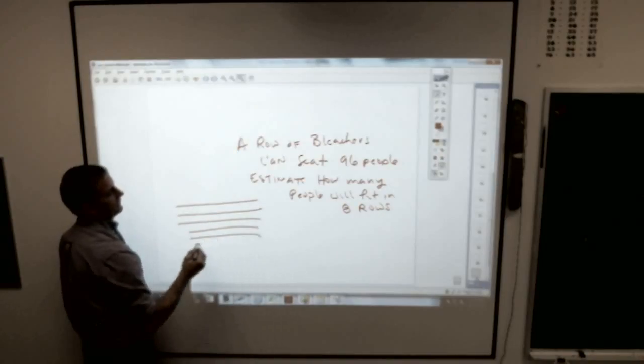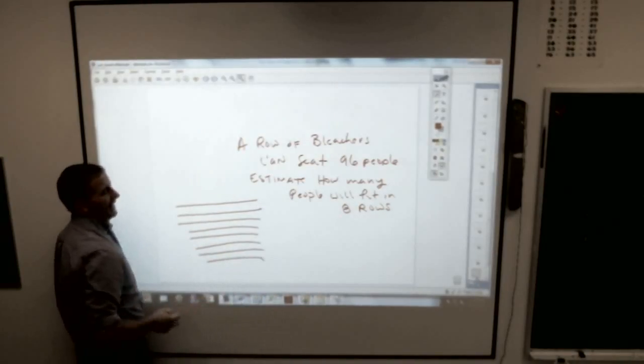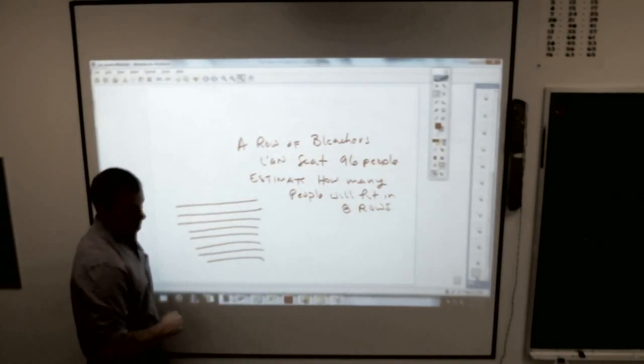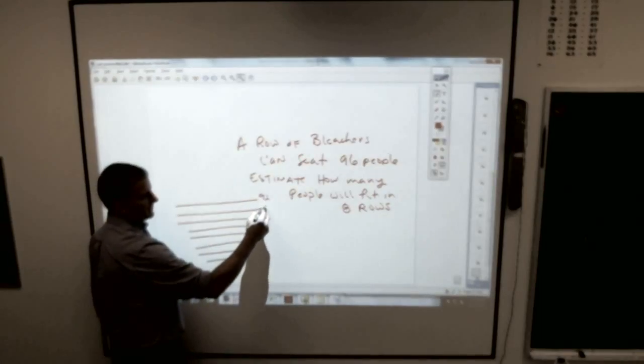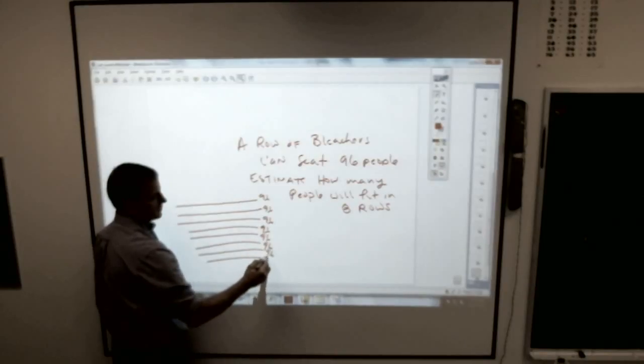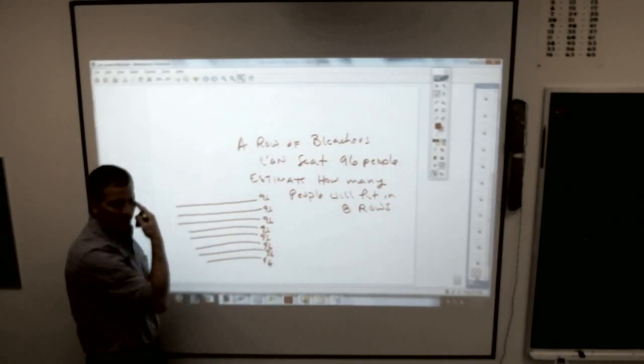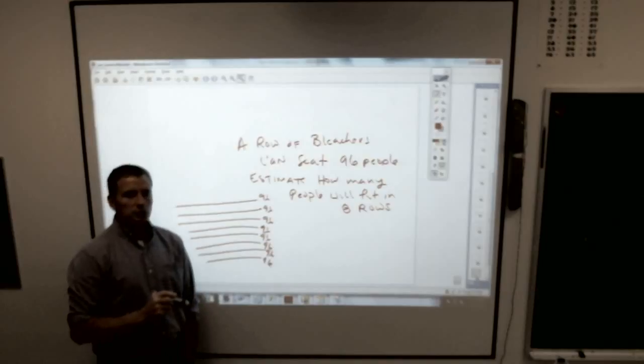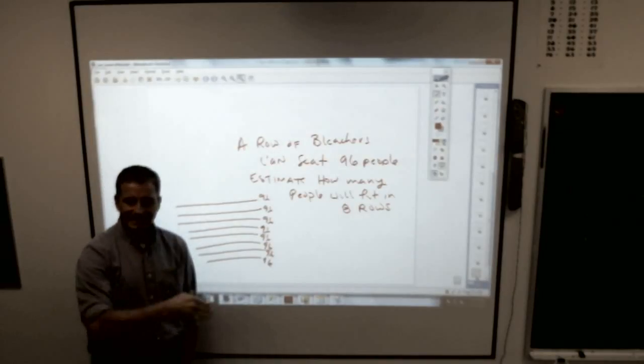You have eight rows of bleachers, right? How many are in each row? 96. Now, understand this, young fifth graders. This is where some people make mistakes. You use rounding to make estimating easy.